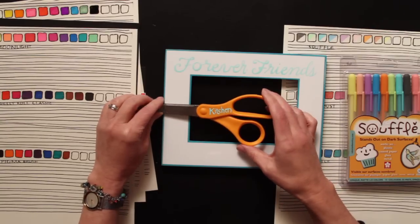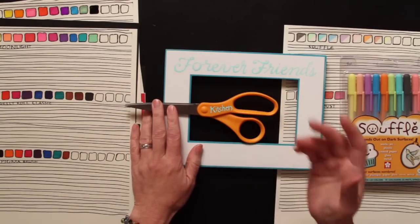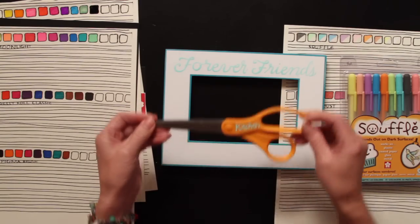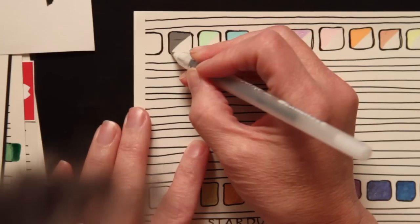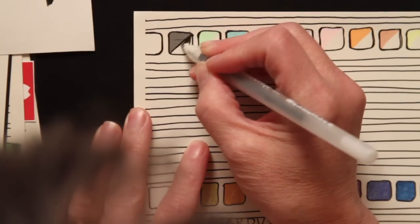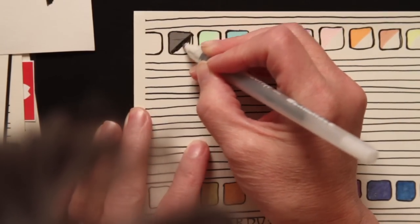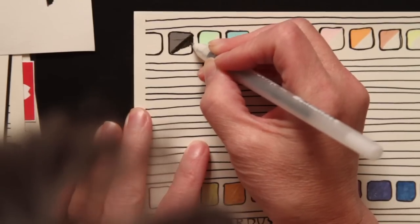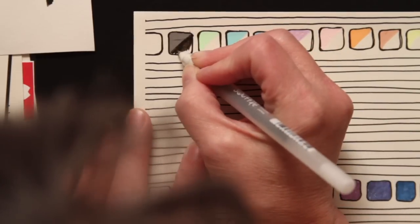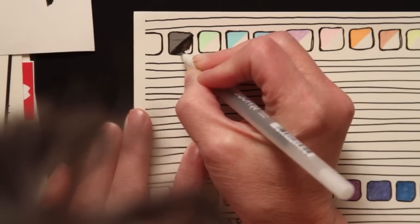Soufflé is great for personalization. Scissors in my house have a way of walking off, so I even used Soufflé to write on my kitchen scissors in hopes that they will stay in the kitchen. I want you to see that when the Soufflé comes out, it's actually a lot darker than it dries. It starts out one color, but it dries an opaque pastel, and some colors change more than others.